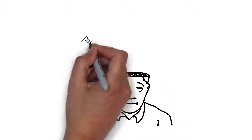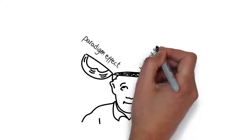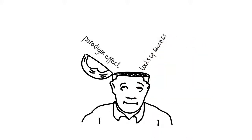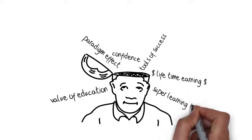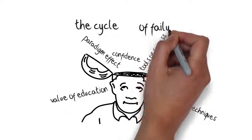Some of which include the paradigm effect which changes your associations to the positive and empowering, the essential tools of success and what it means to own a tool versus just having a tool, the true value of an education as it pertains to confidence and lifetime earnings, super learning techniques that massively escalate your ability to retain information, and finally the vicious cycle of failure and how to break it.